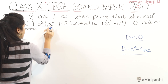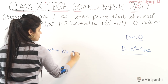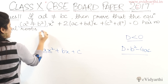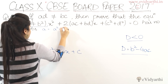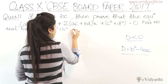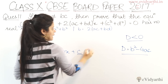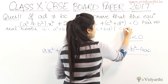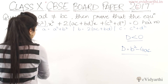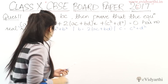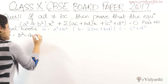Looking at the equation, we identify the coefficients. A is (a² + b²). Since B is with x, B equals 2(ac + bd). And the last term gives us C equals (c² + d²).